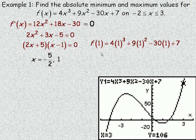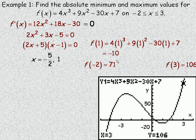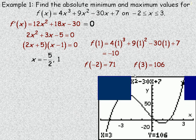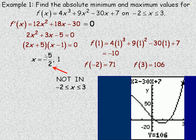Now we substitute these critical numbers and the endpoints into the original function to find the y-values. Substituting x = 1 gives a value of negative 10. Substituting the endpoint x = −2 gives 71, and x = 3 gives 106. Note that x = −2.5 is not in the interval from negative 2 to 3, so we don't substitute it — even though it's a place where the derivative equals zero, it lies outside the interval we're searching on.